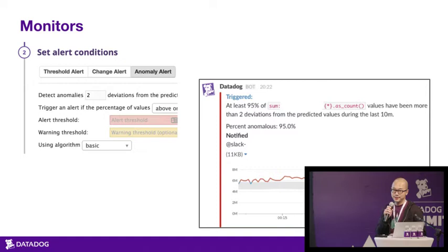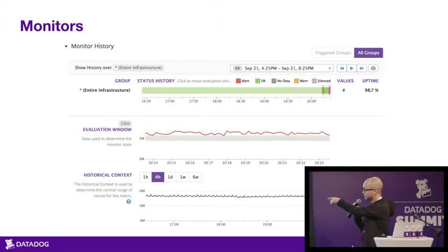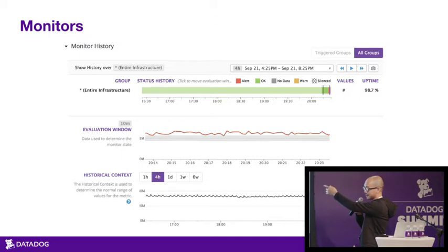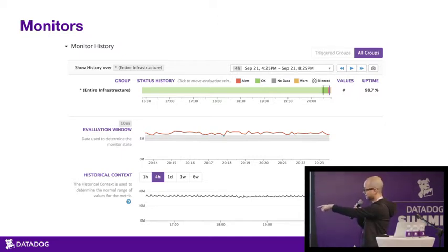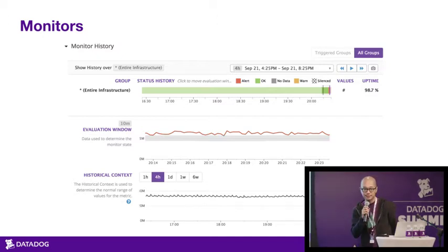Once you get that alert, you can click through to the monitor status page, which shows you the corresponding snapshot you received. We also give you historical context — the snapshot alone doesn't tell you why the band is at 5 and why the metric being at 6 is anomalous. But if you click through to the historical context, you can see that this metric is pretty much steady where it is, and the fact that it's up at 6 million is indeed anomalous.